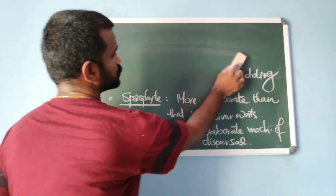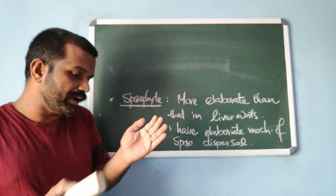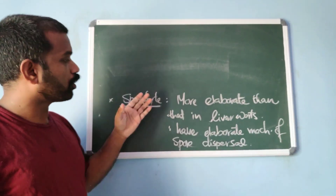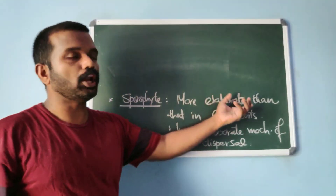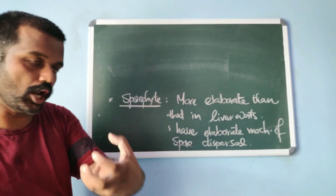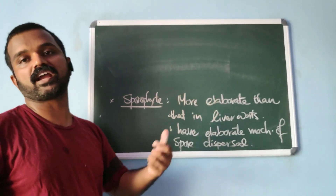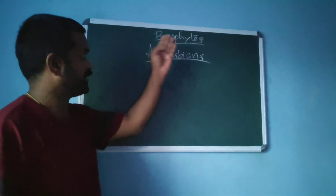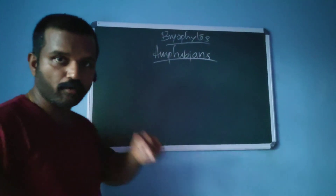The sporophyte of mosses is more elaborate compared to the sporophyte of liverworts, and it has an elaborate mechanism of spore dispersion. Bryophytes are also known as amphibians of the plant kingdom because they live in soil but require water for fertilization.